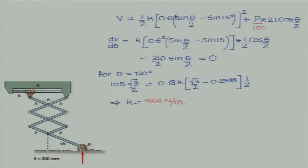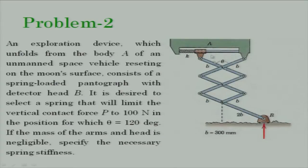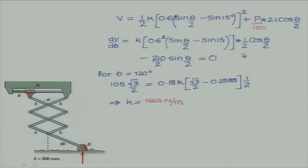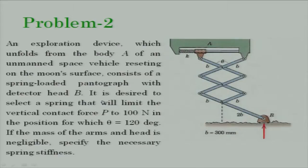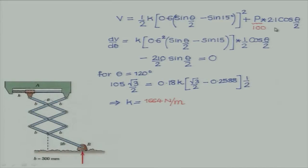We need the elastic potential energy and the potential energy due to force P. Taking the bottom bar as the reference level, counting the arm links — there are 7 links of length B — the height of point B above the datum is 7B·sin(θ/2). The potential energy from force P is therefore P times 7B·cos(θ/2), and since each arm length is 300 mm, 7 times 300 mm gives 2.1 m, so V_P = P × 2.1 × cos(θ/2).